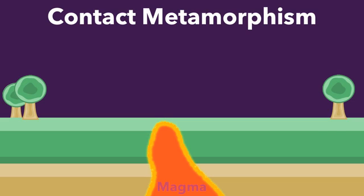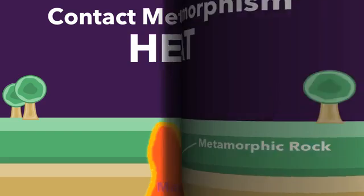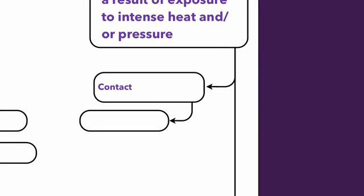So, anywhere you see the orange, you're going to have some metamorphic rock. This is caused primarily by heat. The first type on our flowchart is contact metamorphism, and this is caused by contact with heat. Whenever a rock comes into contact with magma or lava, it is burned or metamorphosized by that heat.